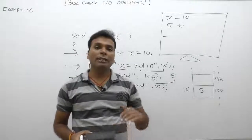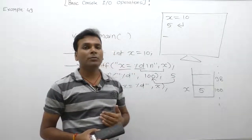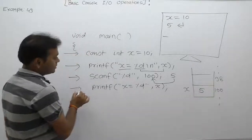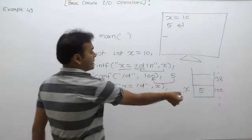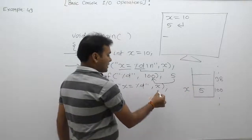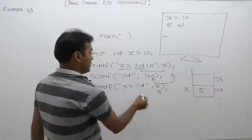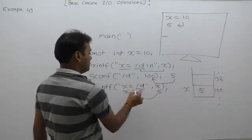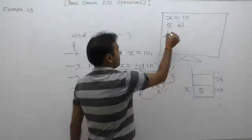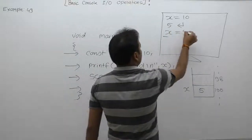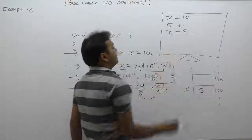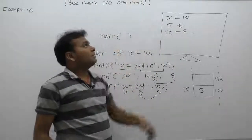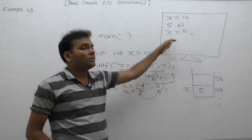A constant's value cannot be changed directly, but it can be modified via its address or pointer. When the printf function executes again, the current value of x is 5, so the final output is 'x = 5'. This demonstrates that initially x had the value 10, but after scanf wrote to its address, the value became 5.